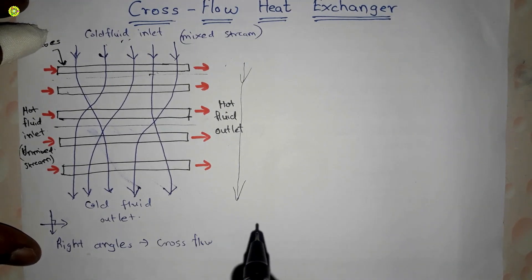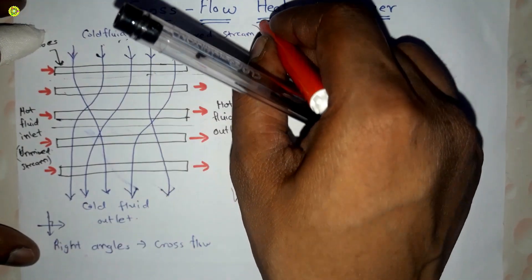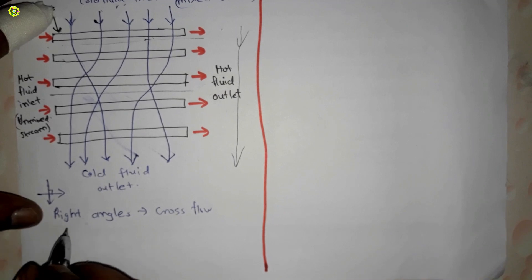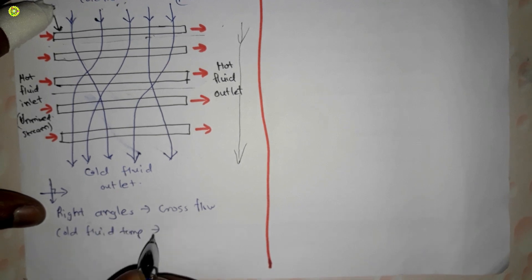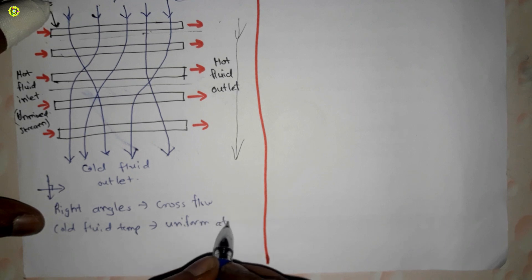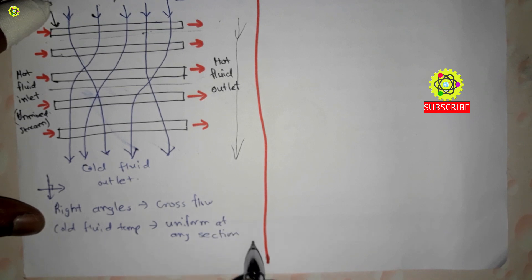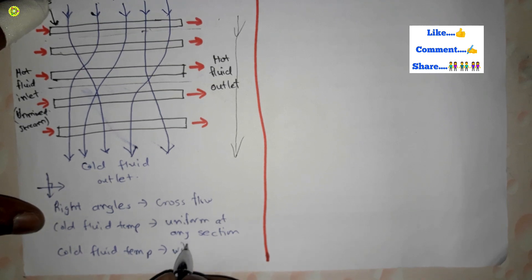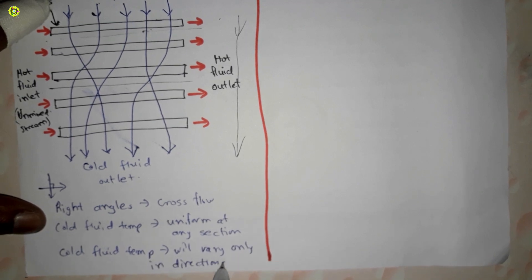Now we will look at the second type — the unmixed stream. To summarize the mixed type: the cold fluid temperature is uniform at any cross-section, and the cold fluid temperature varies only in the direction of flow, which is the vertical direction as we have seen.